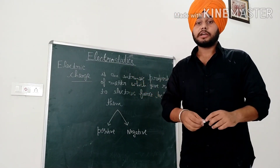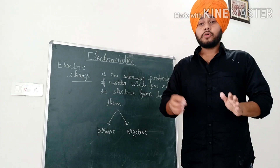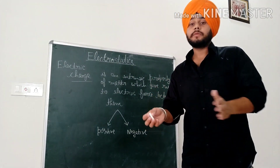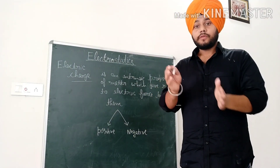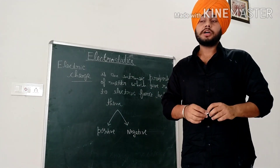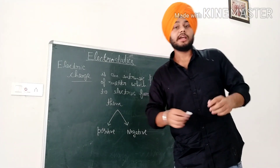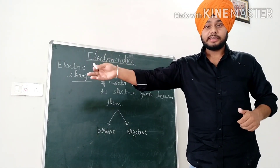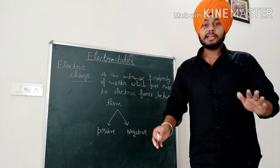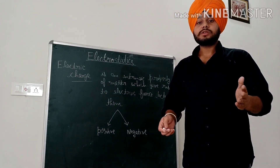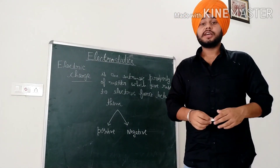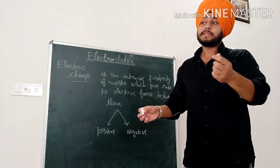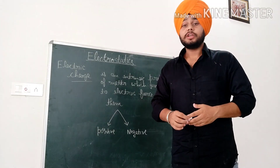When we have two objects, the electrons are transferred between them, resulting in electric charge on each object.